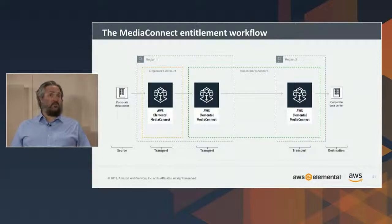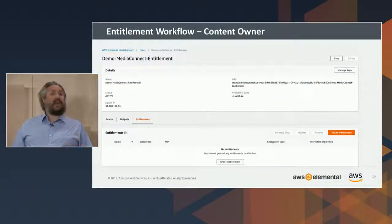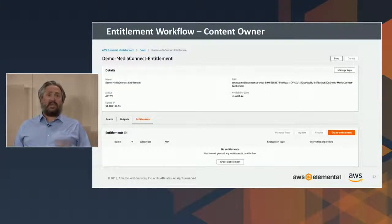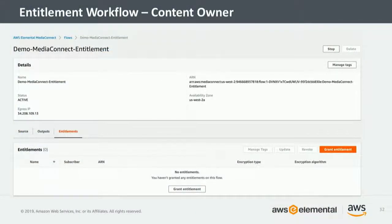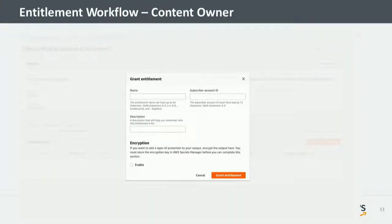There are some really cool things worth pointing out here. Let's look at how easy it is to build up an entitlement workflow using AWS Elemental Media Connect. Here you can see the flow details page — this is the owner's flow. Let's say it's a 24/7 linear channel and we want to syndicate that to a partner. So what we do is click on the Grant Entitlement button right there in the console. Once you've done that, a pop-up appears where you can give it a name — something that makes sense to you as a content owner. You then put in the all-important AWS account ID of the subscriber, and finally a description, which helps you notarize and make sense of what this entitlement means from your perspective.